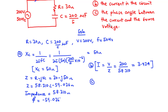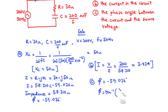For part C, we find the phase angle between the current and the voltage. From part A, the phase angle is negative 59.036 degrees. This can also be verified using the formula: phase angle equals the inverse tangent of XC divided by R, which is inverse tan of negative 50 divided by 30, giving the same result of negative 59.036 degrees. That's it for today's video — thanks for watching.